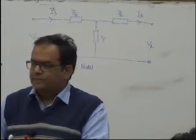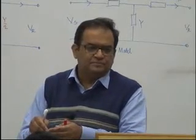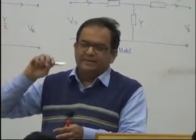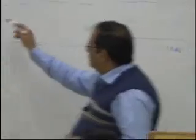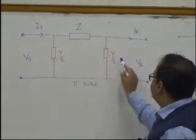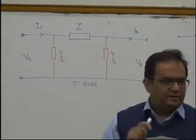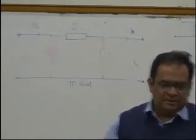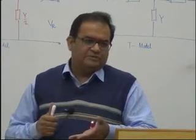No matter which model we use, our final results would match. But in no way is this the actual representation of the line. In the actual line, these things are uniformly spread — there is some current value, then a voltage drop, then another current value, and you finally get IR. But this simplified version can still give us a reasonably good solution for a medium transmission line.